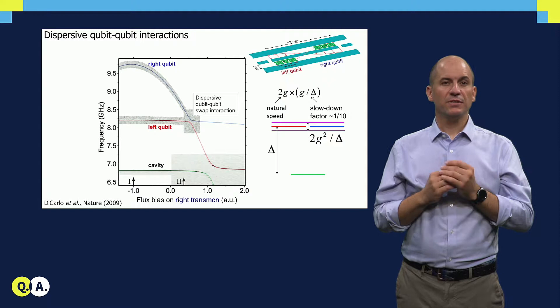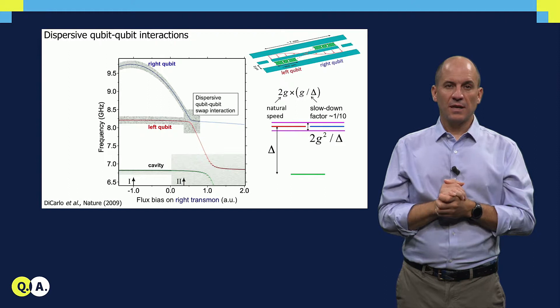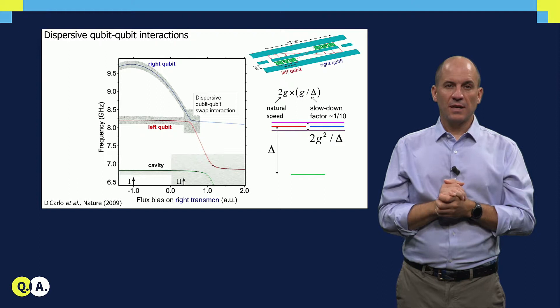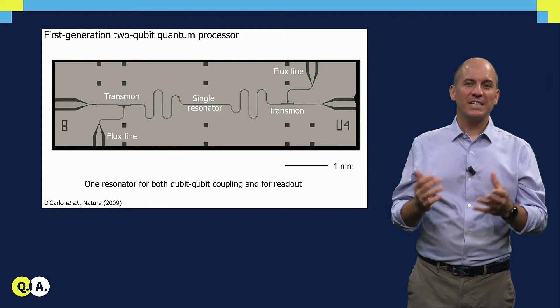These qubit-qubit interactions, mediated by a dispersively coupled common bus resonator, are the key to doing two qubit gates. Adrian will discuss the specific avoided crossing that we use to implement two qubit conditional phase gates. Hint, it's not this one.